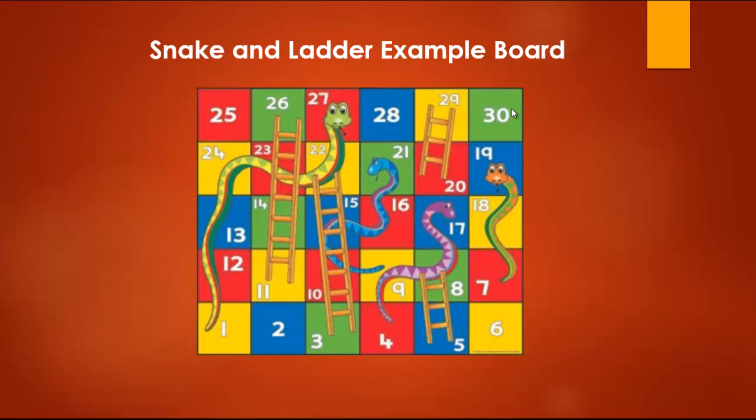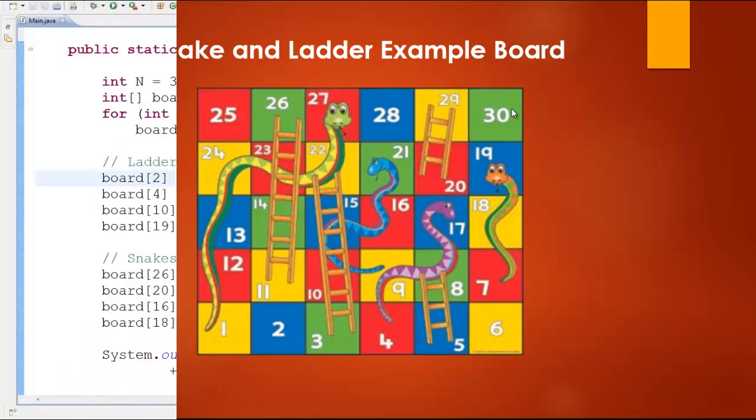That is what we need to find: the minimum number of moves to complete the entire board with the output of the dice controlled. Now, in order to explain how the board is made in the program, let's switch over to the actual program itself.